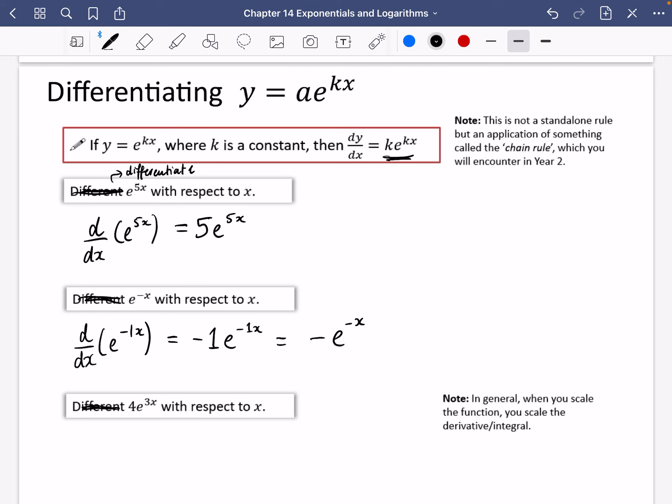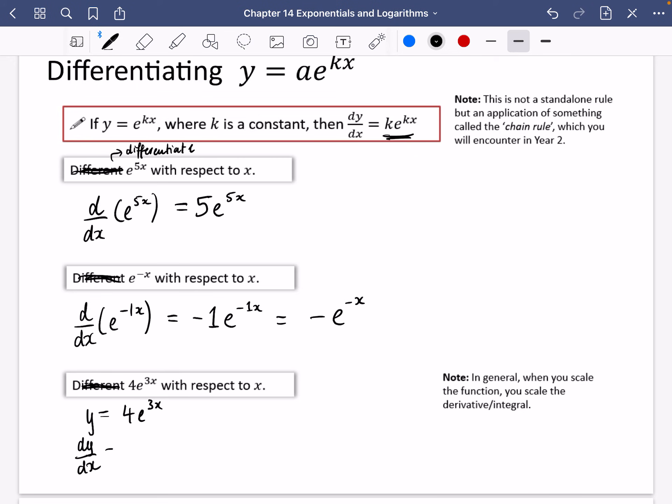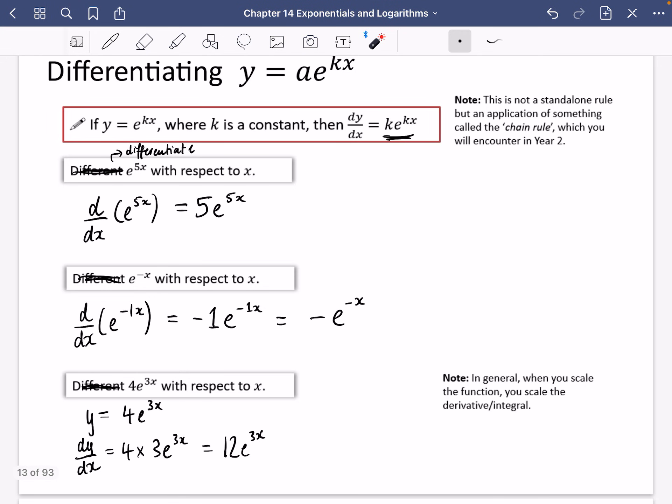And this last one, I'm going to do slightly different notation here. I'm going to say if y = 4e^(3x), we're now going to differentiate this instead. So this 4 that's hanging out outside the front, it's just going to kind of stay there when I do the differentiation. So when I differentiate to get dy/dx, let's just leave the 4 there for a second, and we're going to multiply by the derivative of e^(3x). And that's just going to be 3e^(3x). So it's just going to be 12e^(3x). And that's because it's of this form here. So you just keep the a and multiply. So this note says that in general, when you scale the function, so I've got it here as 4, you scale the derivative or the integral. So usually it would have been 3e^(3x), but I've changed it to 12 because it was scaled by 4.